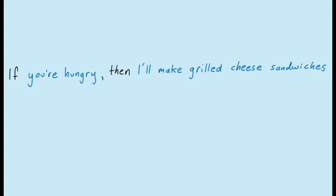We're going to look at how to prove conditional statements. These are statements of the form 'if something, then something else.' In general, there are three common ways to prove conditional statements like this, and we're going to look at the first of those, something called a direct proof, also known as a conditional proof.